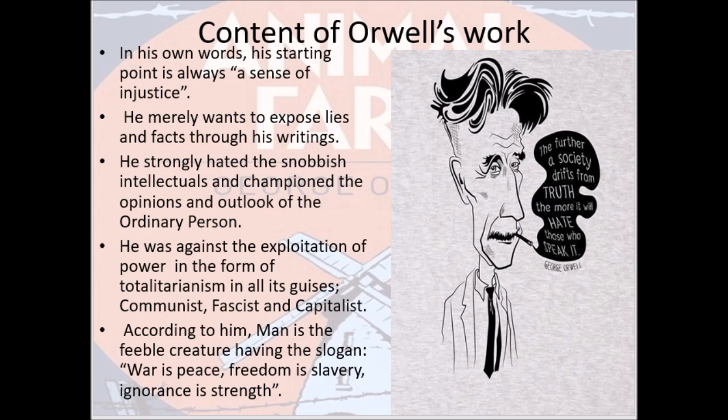In doing so, he became a defender of the lower oppressed working class. Since Orwell was against the exploitation of power in the form of totalitarianism in every guise — be it communist, fascist, or capitalist — Animal Farm and 1984 best explain the horrors of a totalitarian regime, which also explores every possible weakness of man, who according to Orwell is a feeble creature, reflected in slogans like 'War is Peace, Freedom is Slavery, and Ignorance is Strength.'